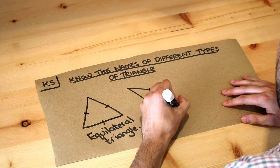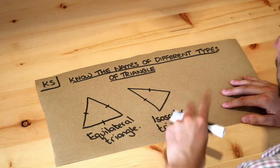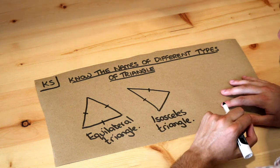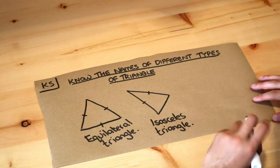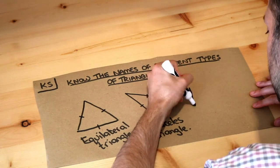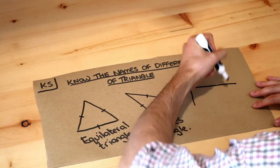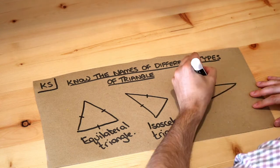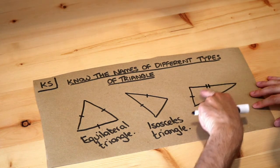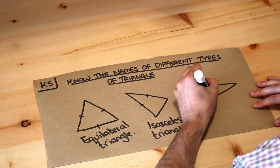Isosceles is probably one of the most misspelt words in math, so do observe the spelling there. And then finally, if all three sides are different lengths, so this length is different from this length, so I'm going to put two marks there to indicate that that's a different length to that, and then I'll put three marks here...